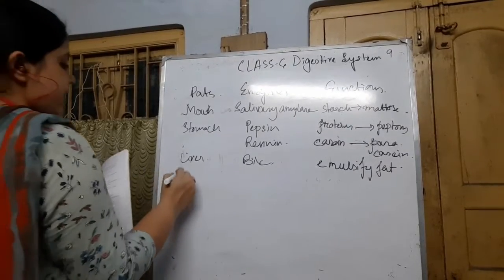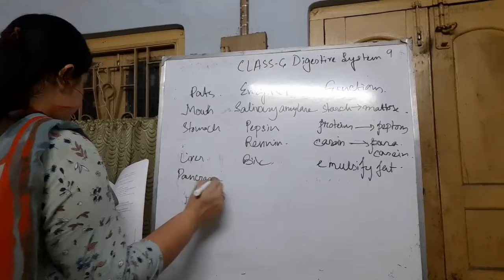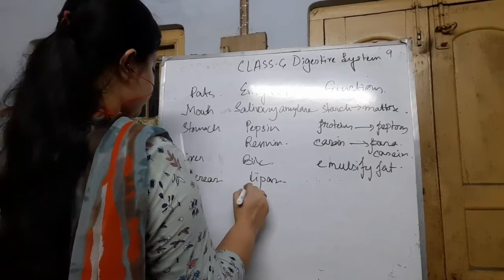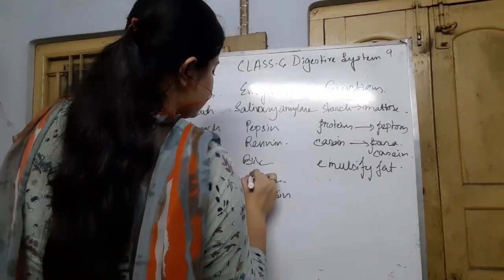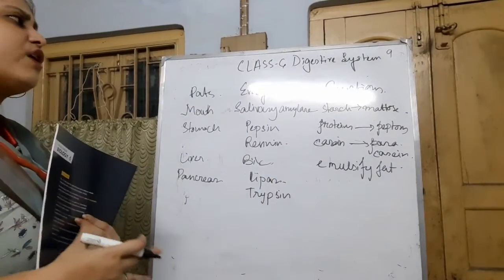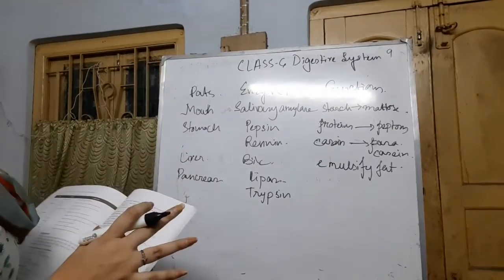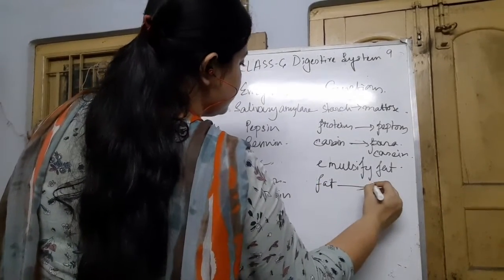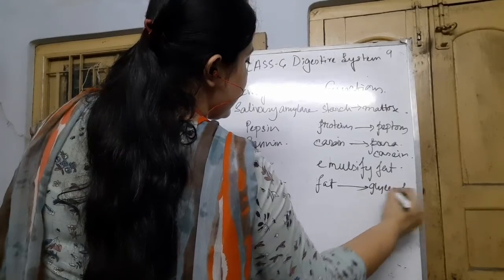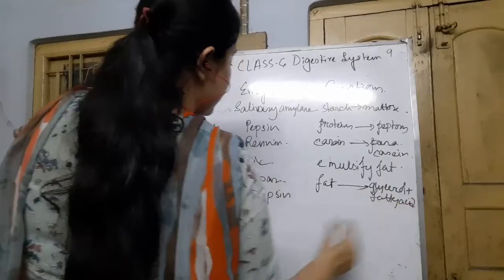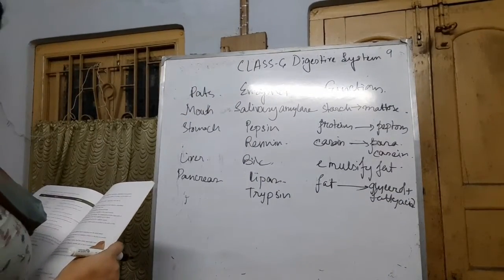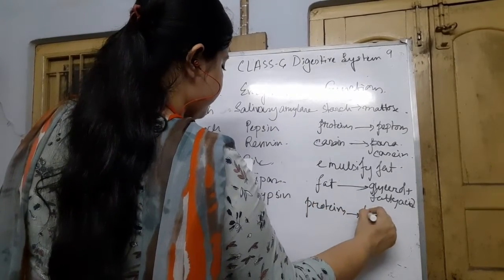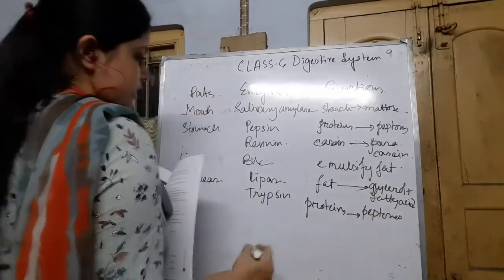Next, in the pancreas, two main types of enzymes are present: lipase and trypsin, among many more enzymes. The function of lipase is to convert fat into glycerol and fatty acids. The function of trypsin is to change proteins into peptones and proteases.